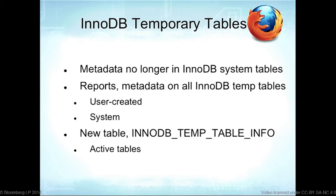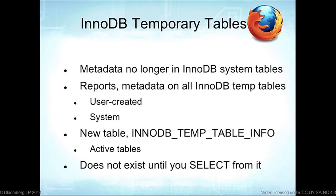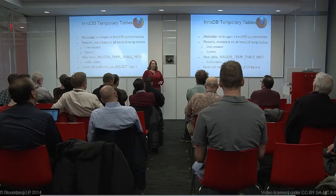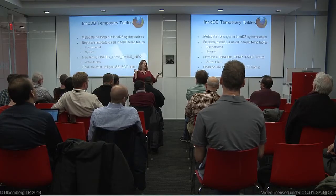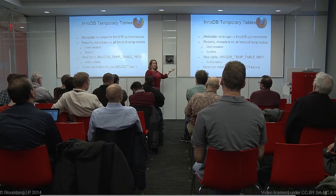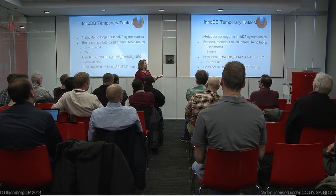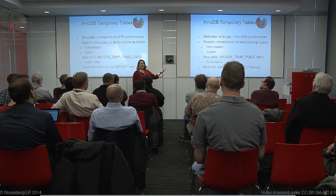Metadata is no longer going to be in the InnoDB system tables. All InnoDB temporary table metadata — including user-created and system tables and intermediate query temporary tables — will go into a new table called 'innodb_temp_table_info'. It's only for active temporary tables. Interestingly, this is a magic table: it doesn't appear in 'SHOW TABLES FROM INFORMATION_SCHEMA' — it only appears when you SELECT from it for the first time.